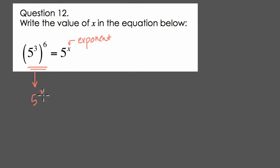5 to the 3rd to the 6th power. What could that even mean? Well, that's going to mean that we're multiplying 5 to the 3rd 6 times, right?